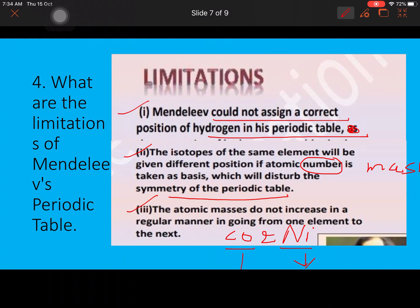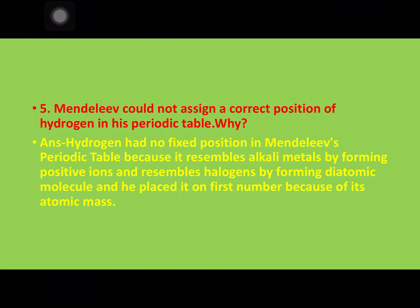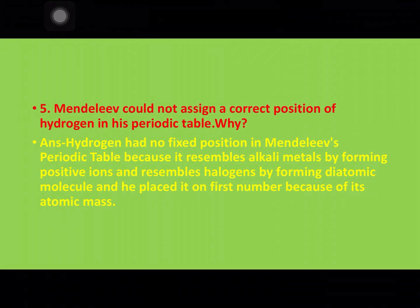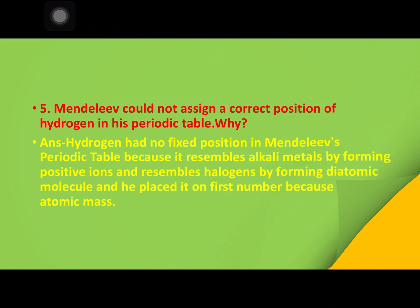The fifth question: Mendeleev could not assign a correct position to hydrogen in the periodic table. Hydrogen resembles alkali metals by forming positive ions and resembles halogens by forming diatomic molecules. He placed it at position one because of its atomic mass. These are the limitations. Hope you liked the worksheet — thanks for watching, do like.